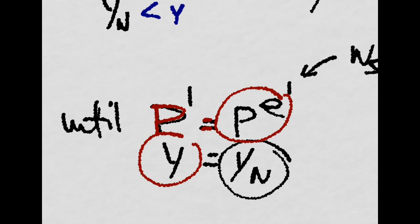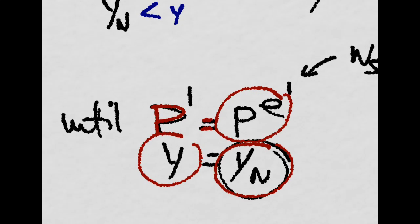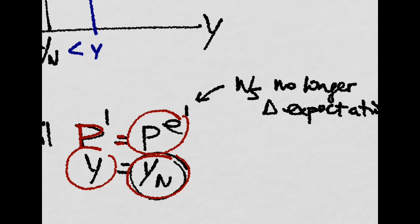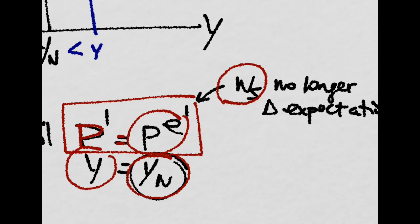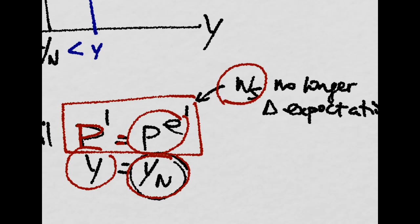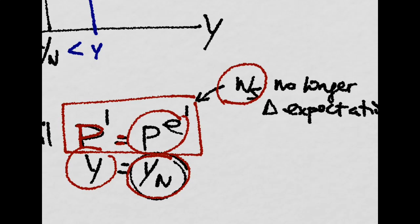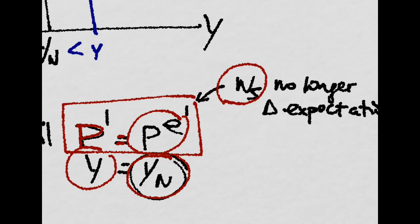Remember, this stability point is where wage setters no longer want to change their expectations, because their expected price level is already equal to the current price level.